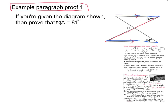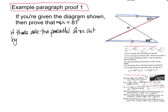The first thing I know is: if there are two parallel lines cut by a transversal — this is just the typical hypothesis for parallel lines — here are my parallel lines cut by a transversal. I notice that this angle is alternate interior to this angle, and I know that alternate interior angles are congruent. So this must be 37 degrees.